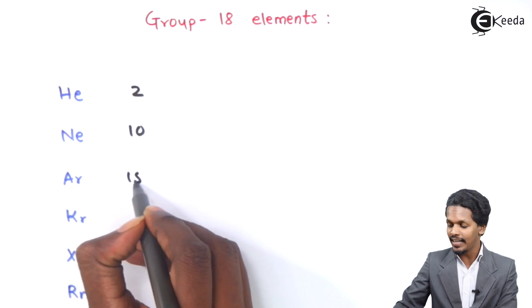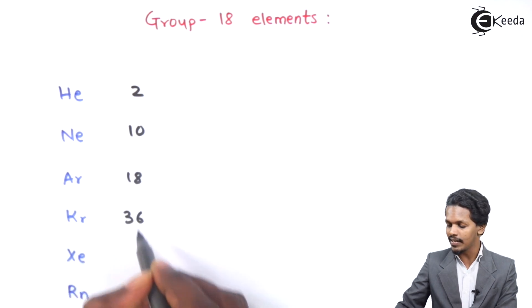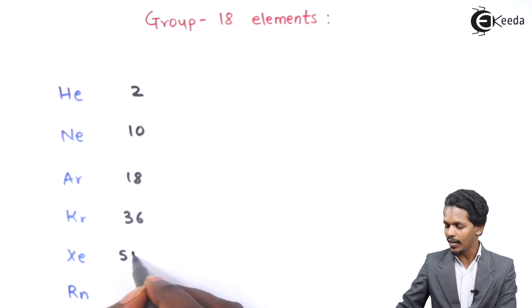Talking about Argon, it is 18. Talking about Krypton, it is 36. And talking about Xenon, it is 54. And for Radon, it is 86.